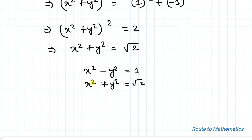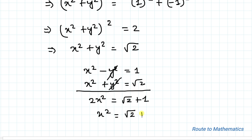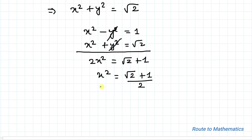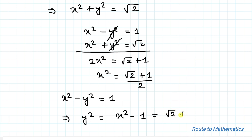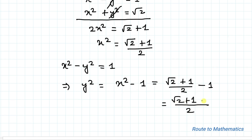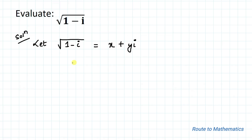To find x², we add the two equations: the y² terms cancel, giving 2x² = √2 + 1, so x² = (√2 + 1)/2. Substituting x² into x² - y² = 1, we get y² = (√2 + 1)/2 - 1 = (√2 + 1 - 2)/2 = (√2 - 1)/2.